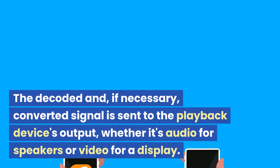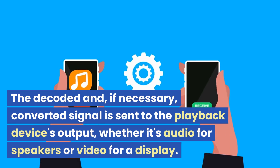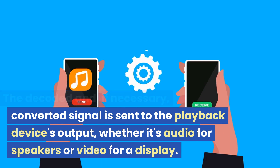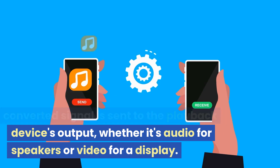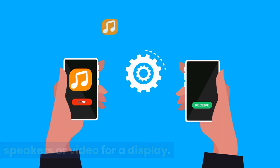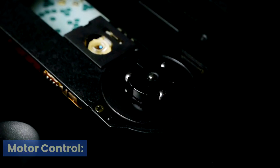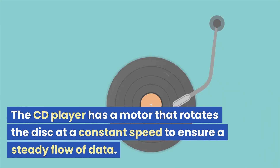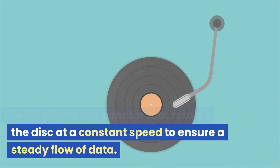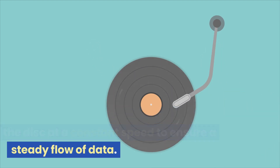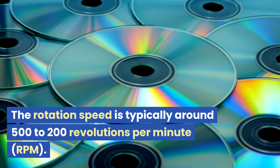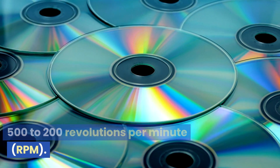Playback. The decoded and, if necessary, converted signal is sent to the playback device's output, whether it's audio for speakers or video for a display. Motor control. The CD player has a motor that rotates the disc at a constant speed to ensure a steady flow of data. The rotation speed is typically around 500 to 200 revolutions per minute, RPM.